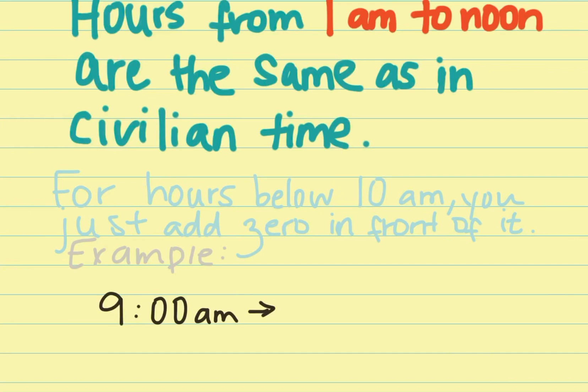Now for hours below 10 a.m., you just add a zero in front of it. That's how you write it. So for example, I say 9 a.m., the way you write it in military time is you just put a zero in front and two zeros like that. That's how you write it.